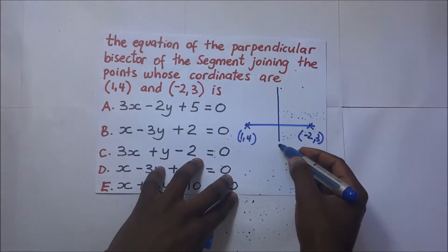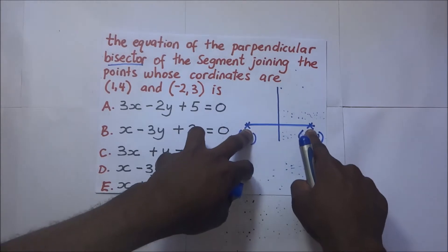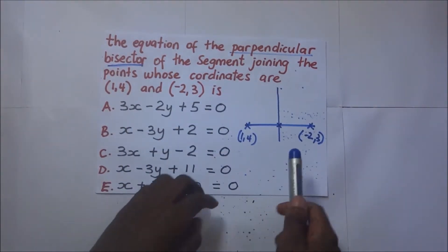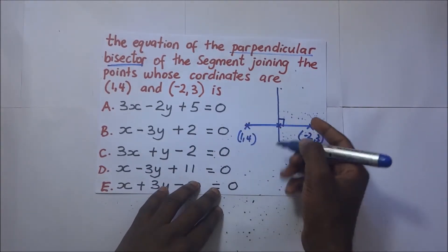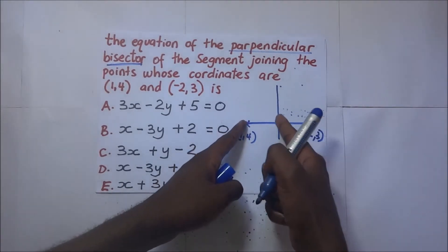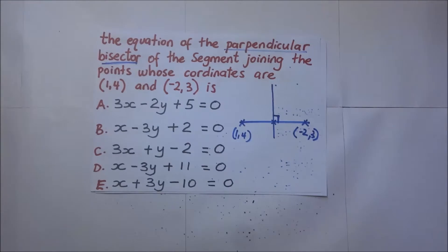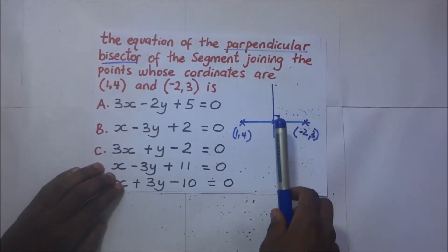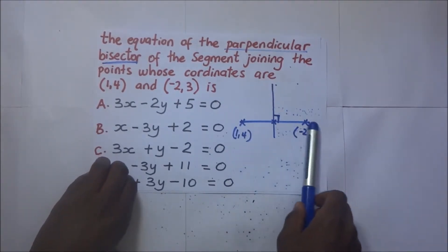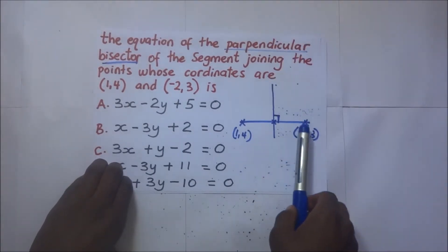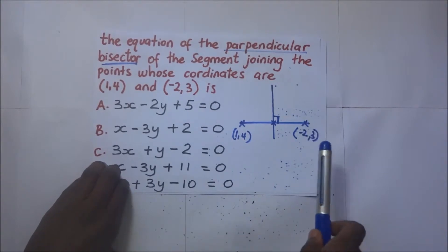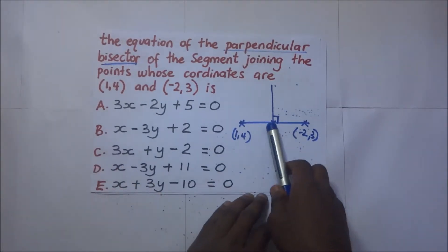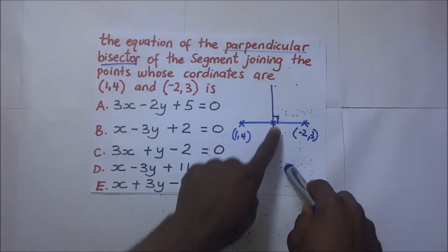This perpendicular bisector passes through the midpoint of the segment since it bisects it, and it meets the original line at 90 degrees. To find its equation, we need first to find the gradient of the perpendicular bisector, which is the negative reciprocal of the gradient of the original line. Second, we need the midpoint of the two given points, since that is the point through which the perpendicular bisector passes.